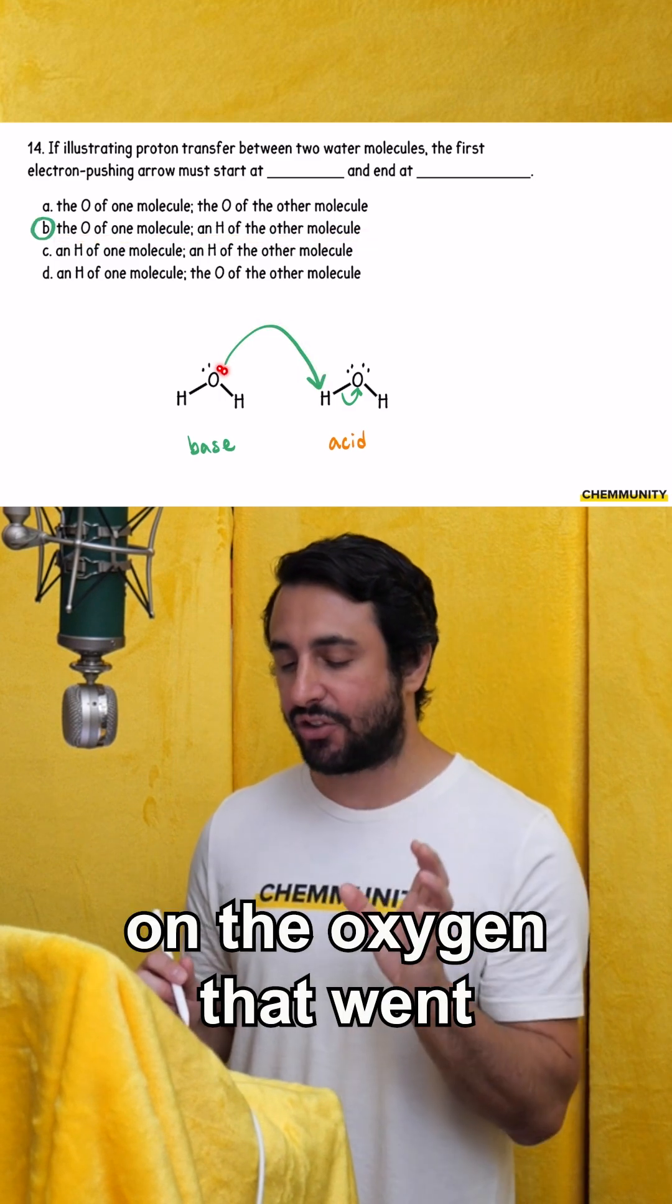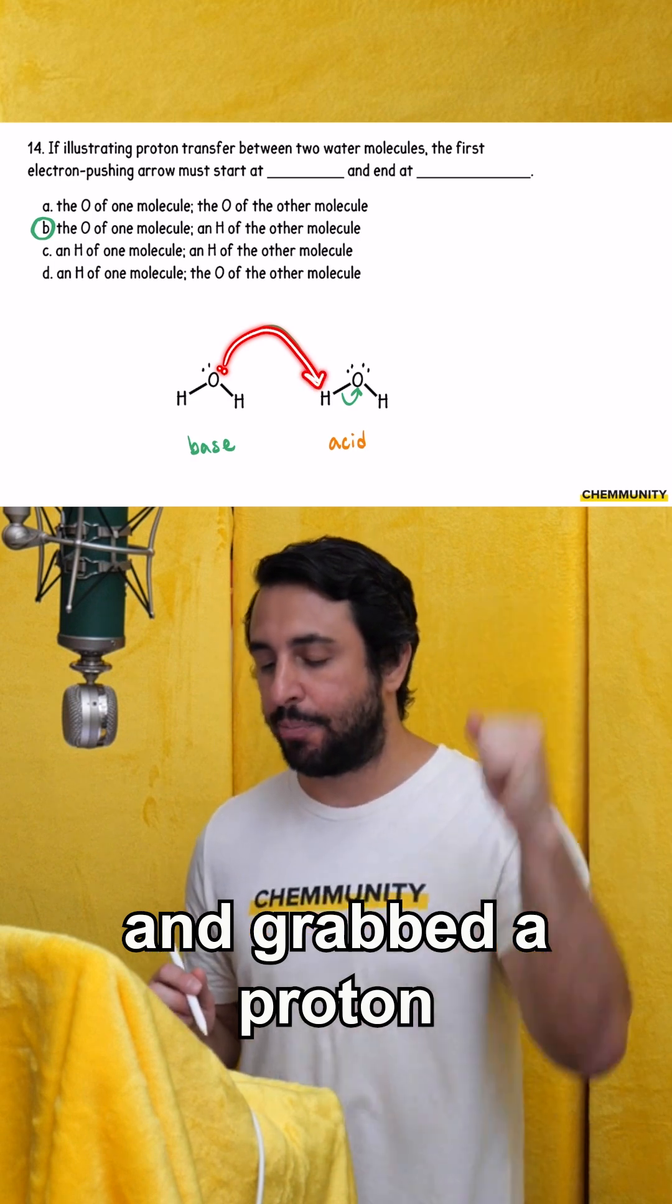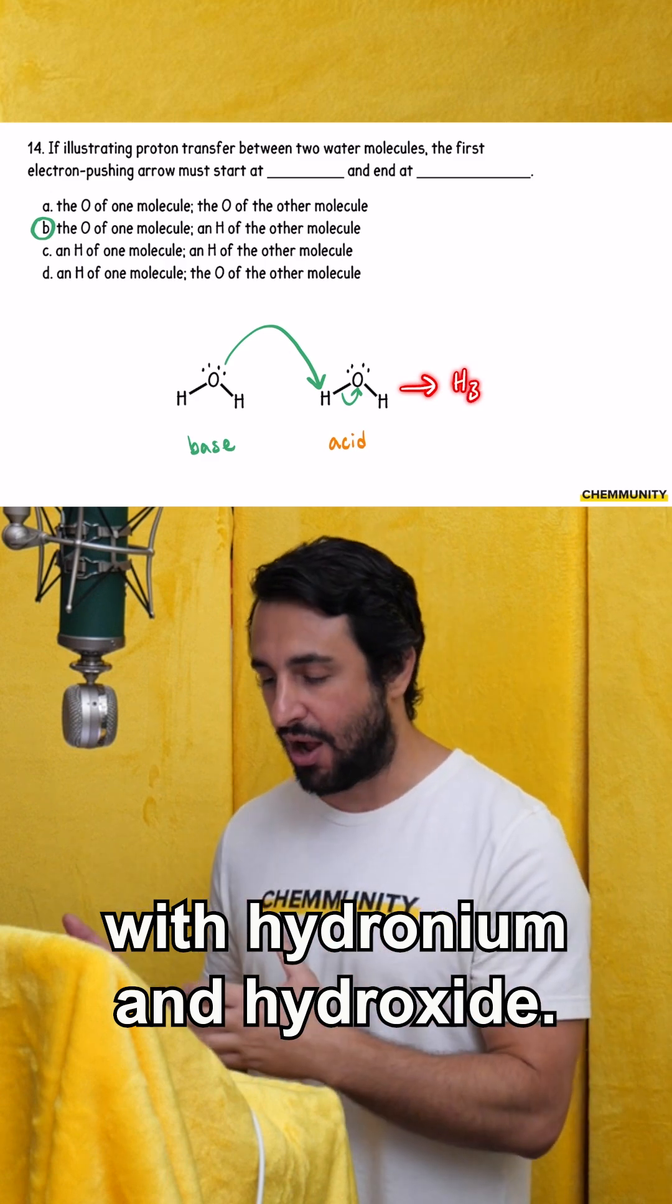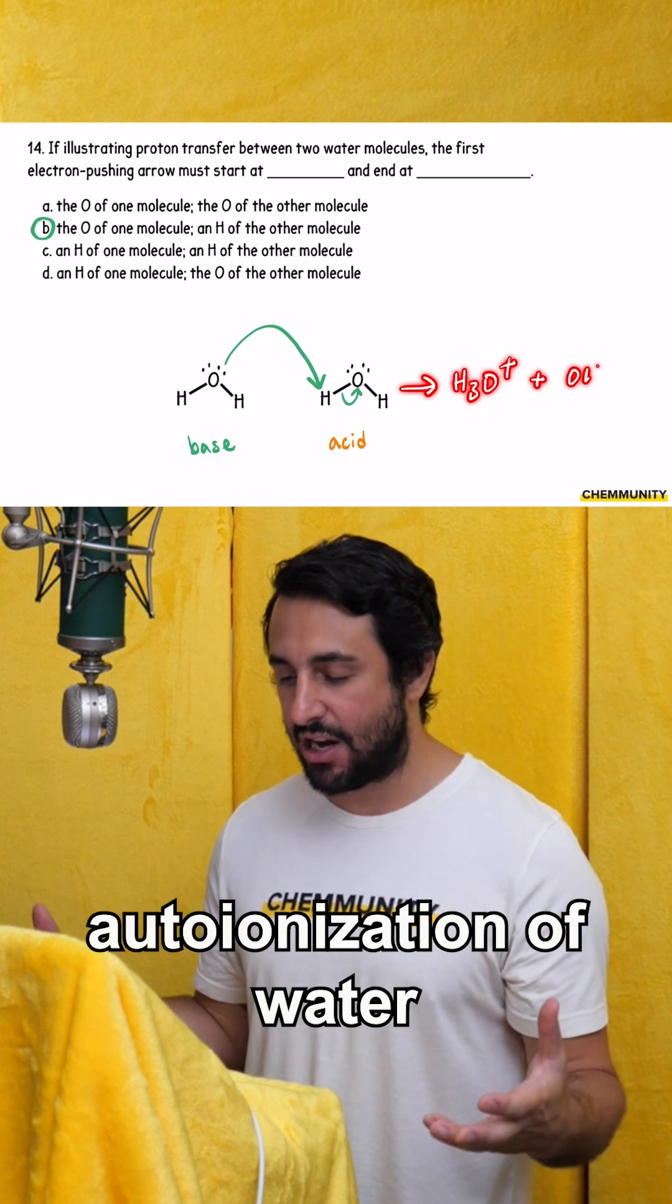It is a lone pair on the oxygen that went and grabbed a proton from the other water molecule, and we're going to end up with hydronium and hydroxide. So that's our autoionization of water right there.